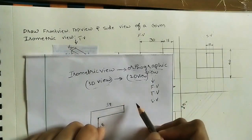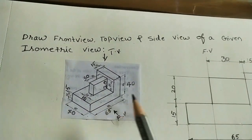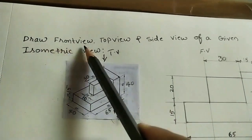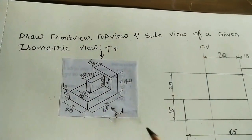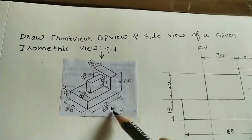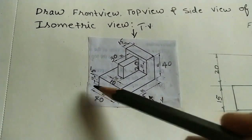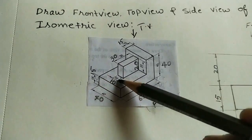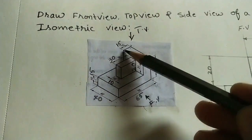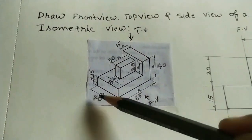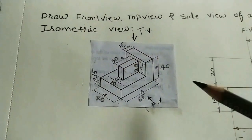Let us see how to do the orthographic view of the 3D diagram. For this isometric view, the given question is: draw the front view, top view, and side view of the given isometric view. In this given diagram, units are not given, so take all units in mm. The dimensions are 40, 65, 40, 15, 10, 30, 20, and 15. The dimension size is very small in the given diagram, so I am rewriting all dimensions. Consider all dimensions in mm.